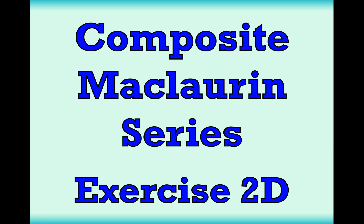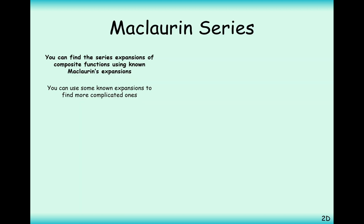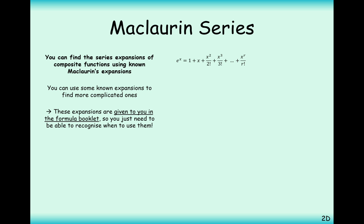Hello there and welcome to A-Level Further Maths. Here we're looking at composite Maclaurin series functions so we can answer questions from exercise 2D. This is a clever use of the formula booklet in answering Maclaurin series questions. So what do we know from the formula booklet? We know we have e to the x equals 1 plus x plus x squared over 2 plus x cubed over 3 factorial, and so on. That's valid for all values of x.